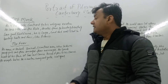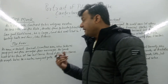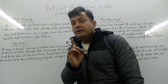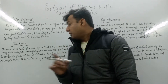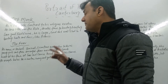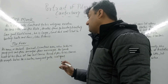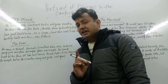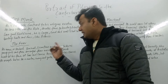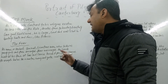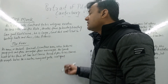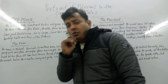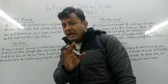Next is the Friar, whose name is Hubert. He is a sensual man who seduces young girls and then arranges their marriages. He spends most of his time at bars and carries knives and pins. He does not care about the poor and gives them no time.